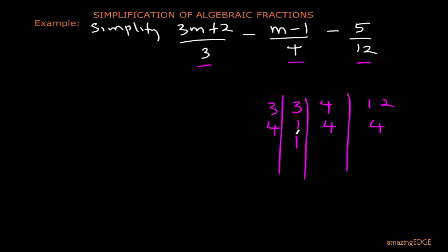So we bring down 1. Then 4 can divide 4, which will give us 1. Then again, 4 can still divide 4 here, so we have 1. Since we have 1 all 3 here, the LCM now of 3, 4, and 12 is the same thing as 12.